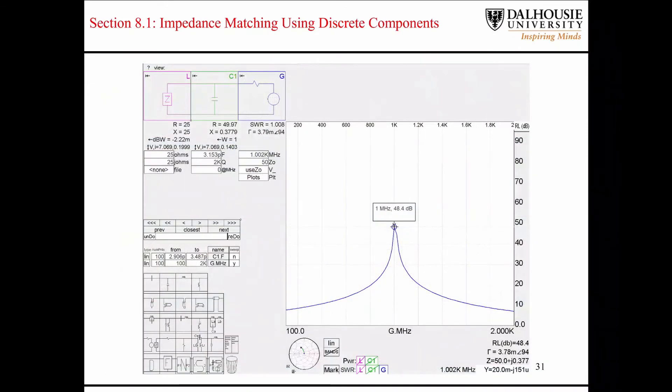The last thing I want to talk about is the concept of broadband matching. There's another view in SimSmith where you can look at the return loss seen looking in from the generator. Just recall from the first lecture that return loss is going to be equal to negative 20 times the log of your input reflection coefficient.